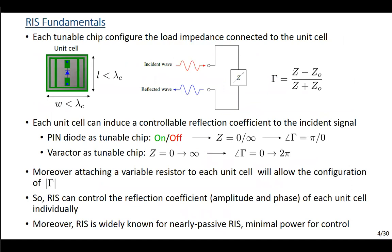The basic idea is that each unit cell has a sub-wavelength dimension, so the length and width of each unit cell is commonly between λ/2 and λ/10, where λ is the wavelength of the incident signal. Given the small dimension of the unit cell, we can represent its response by an equivalent circuit as shown in this figure, where each unit cell is connected to a tunable chip whose role is to adjust its load impedance. Due to the impedance discontinuity between the free space wave and the unit cell impedance, each unit cell can induce a controllable reflection coefficient γ, where Z represents the controllable load impedance and η₀ represents the free space impedance, which is constant.